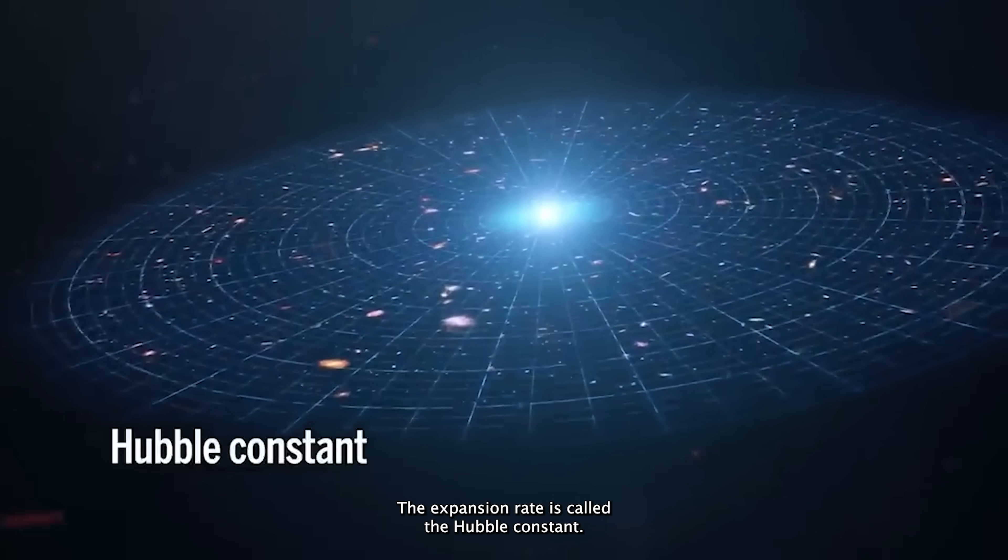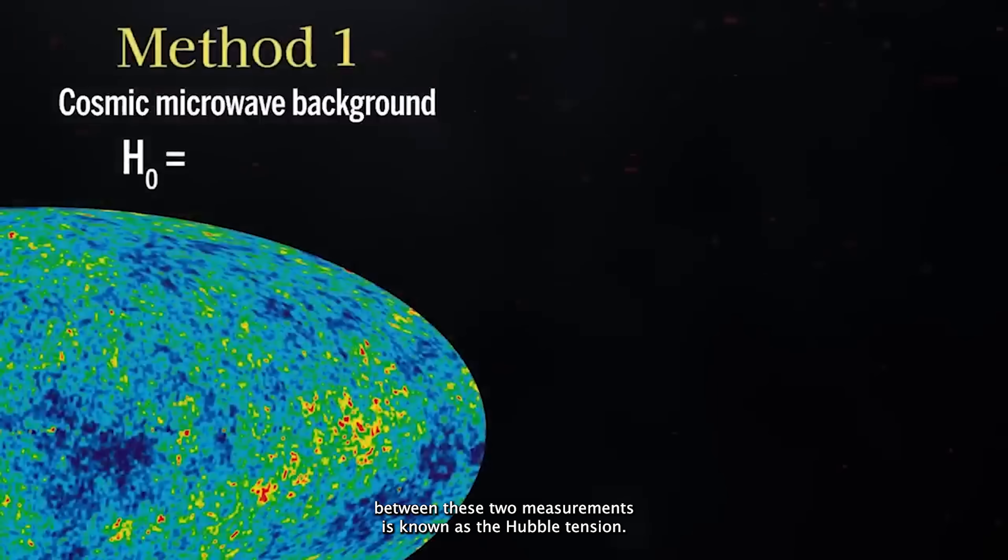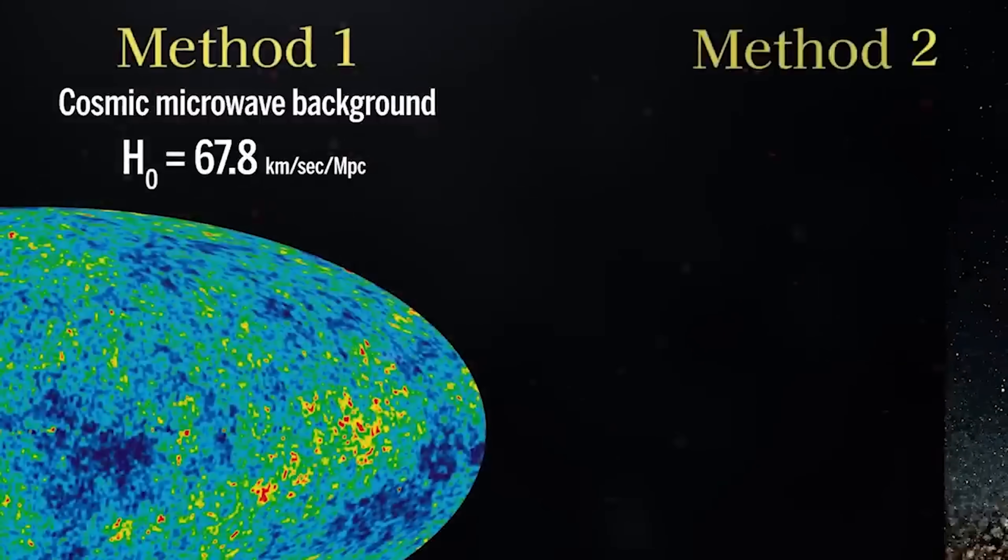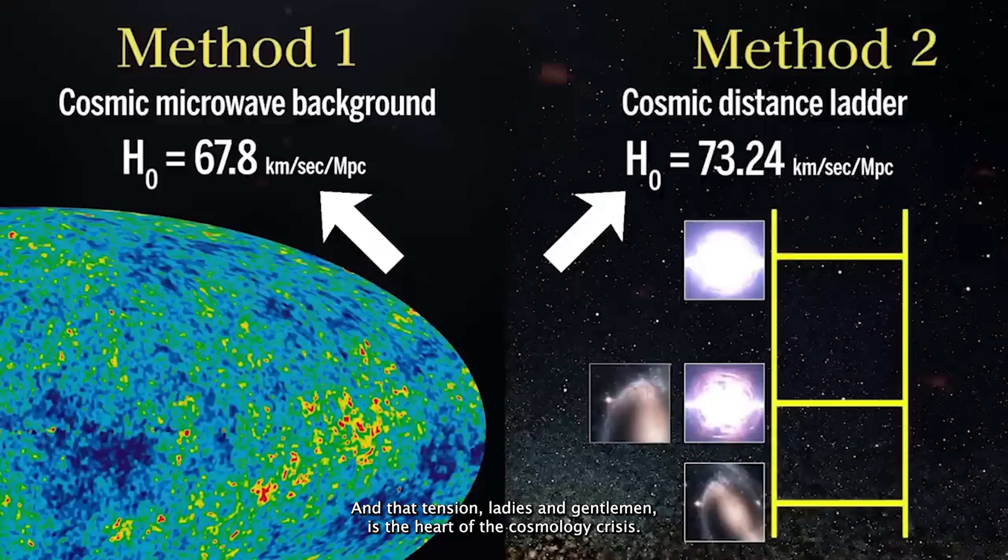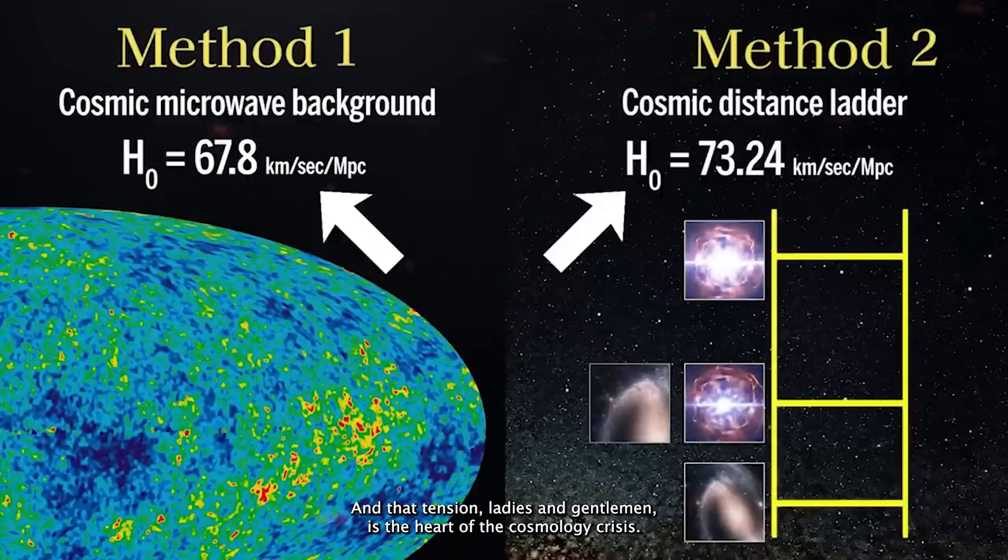The expansion rate is called the Hubble constant. The maddening mismatch between these two measurements is known as the Hubble tension. And that tension, ladies and gentlemen, is the heart of the cosmology crisis.